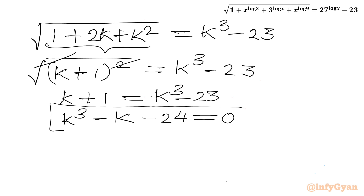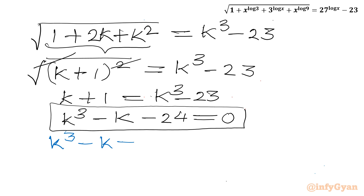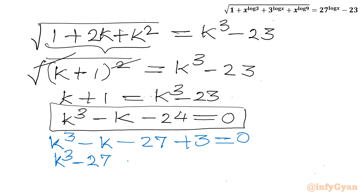Taking all terms to one side, we get the cubic equation k³ minus k minus 24 equals 0. I will solve this cubic equation using factorization. The expression k³ minus k minus 24 can be rewritten as (k³ minus 27) plus (3 minus k), which equals (k³ minus 27) minus (k minus 3), equal to 0.